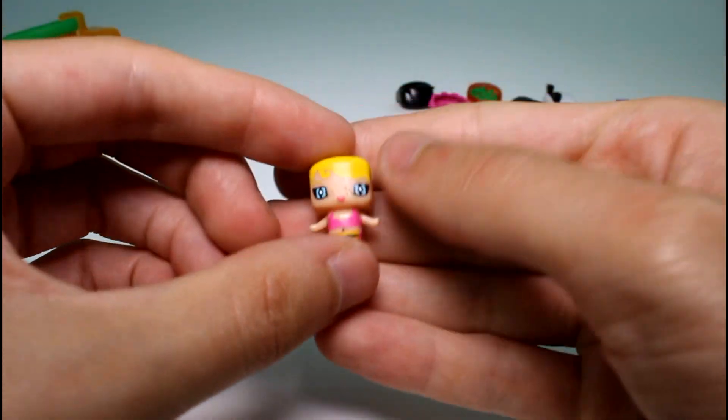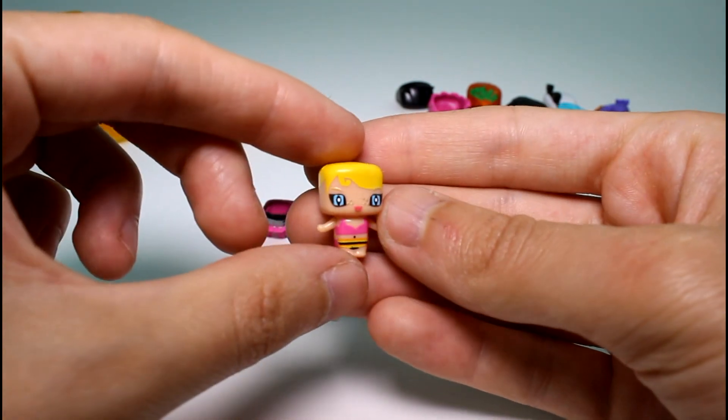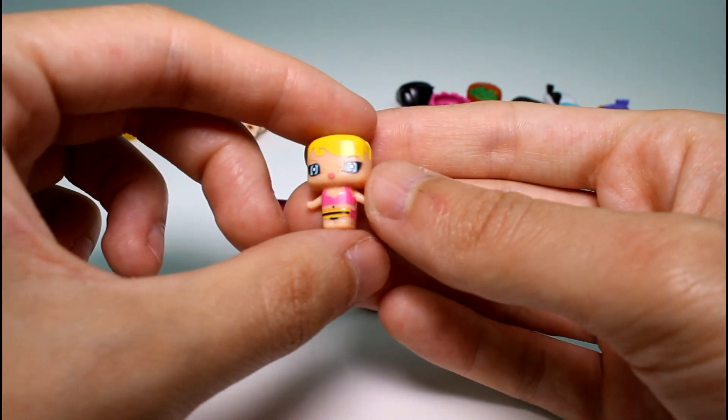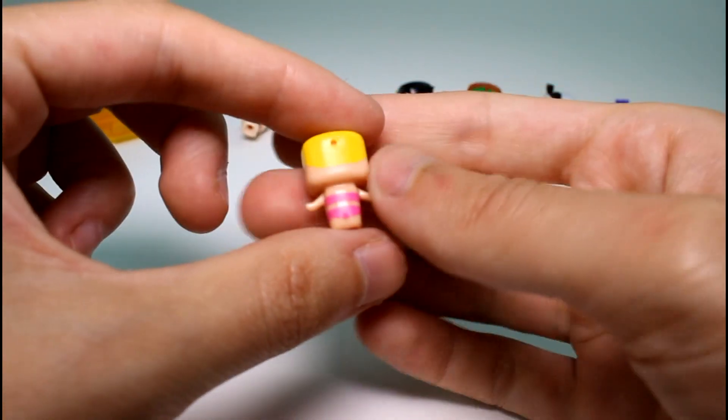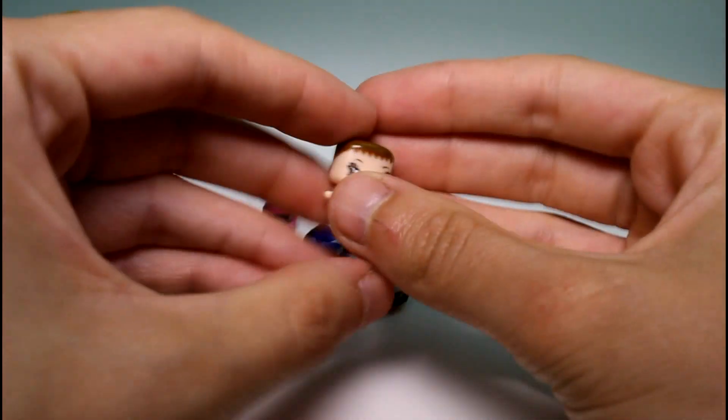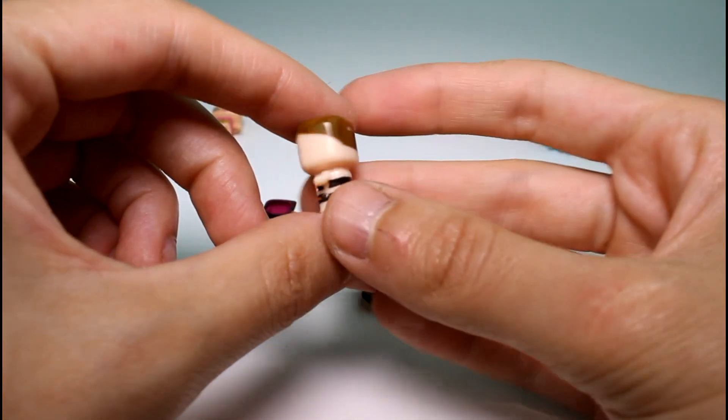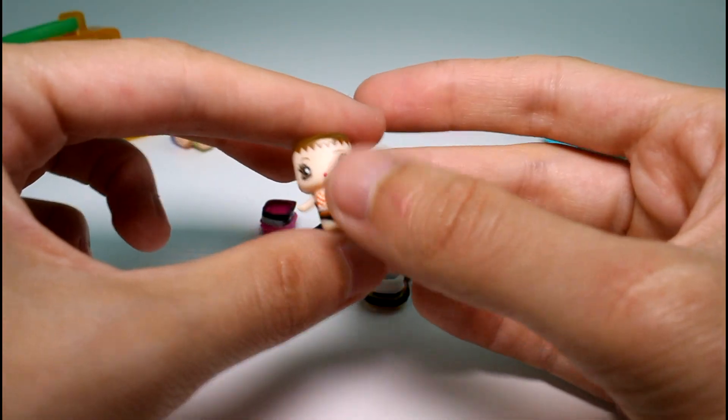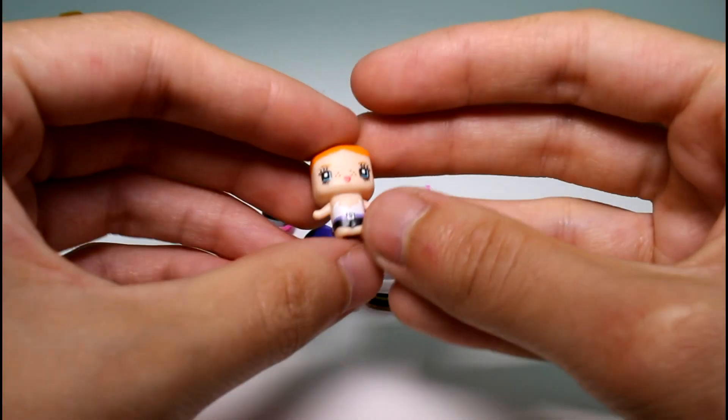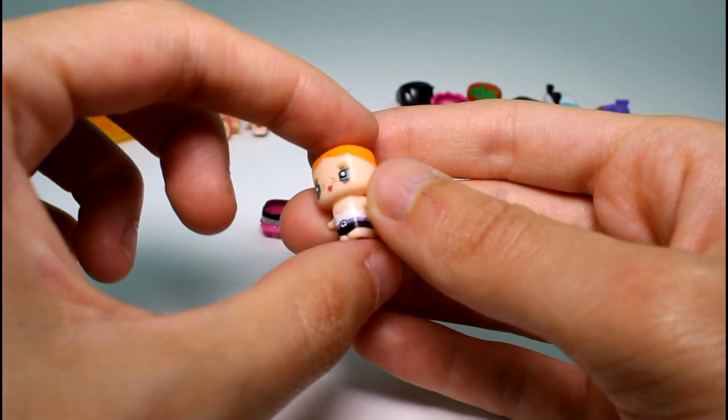So then we have this girl. She kind of has cat eyes. I think I saw a cat costume, so perhaps that's what she's doing. It's so cute. And then we have this girl. She has polka dots, Halloween colors. And then the last girl, we have this one. Cute. Super cute.